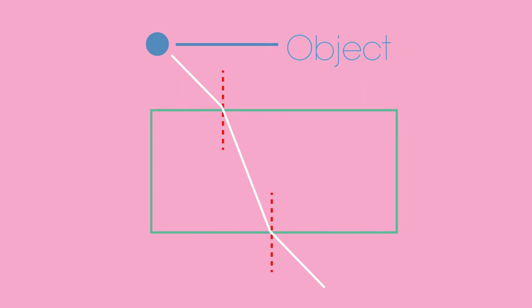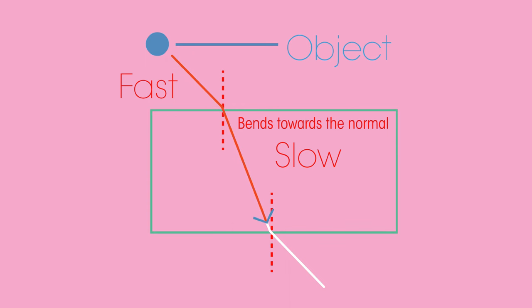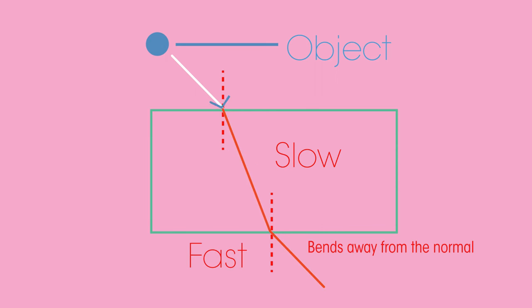If a light wave passes from a medium in which it travels faster to a medium in which it travels slowly then the light wave will bend towards the normal. Whereas if it goes from a slower medium to a faster medium the light wave refracts away from the normal.